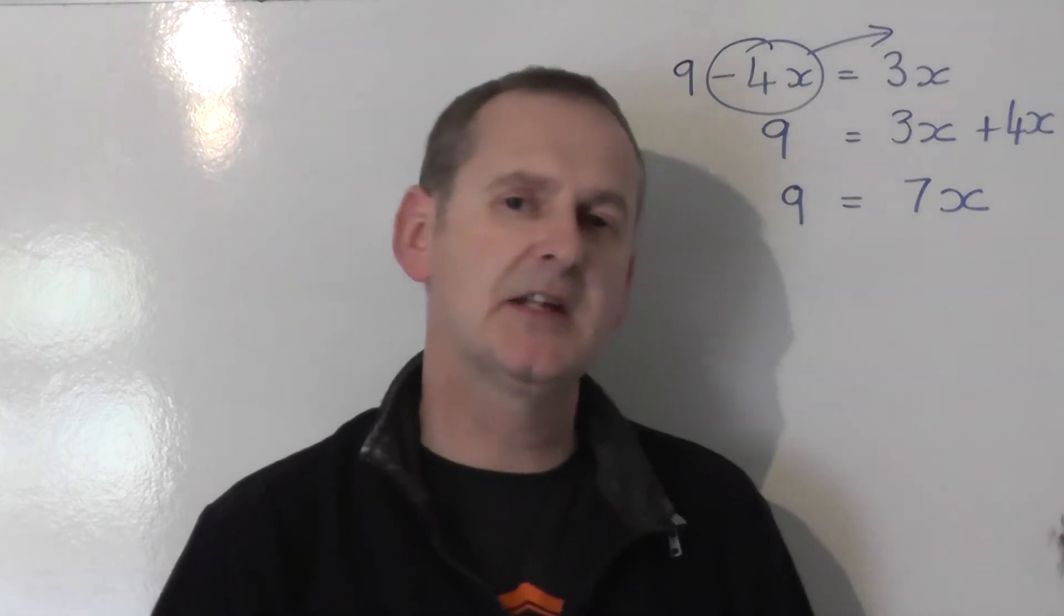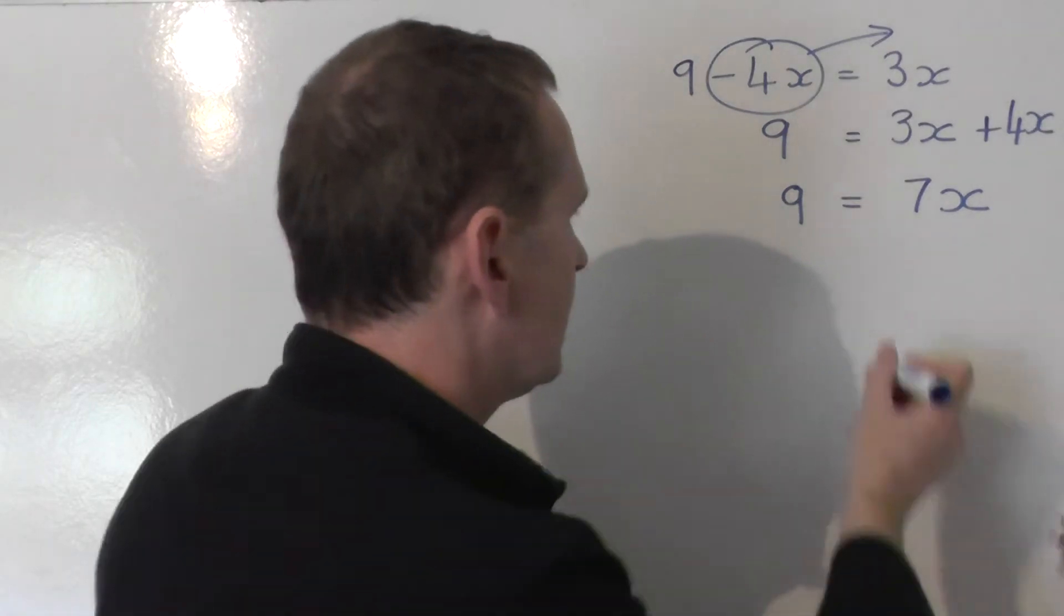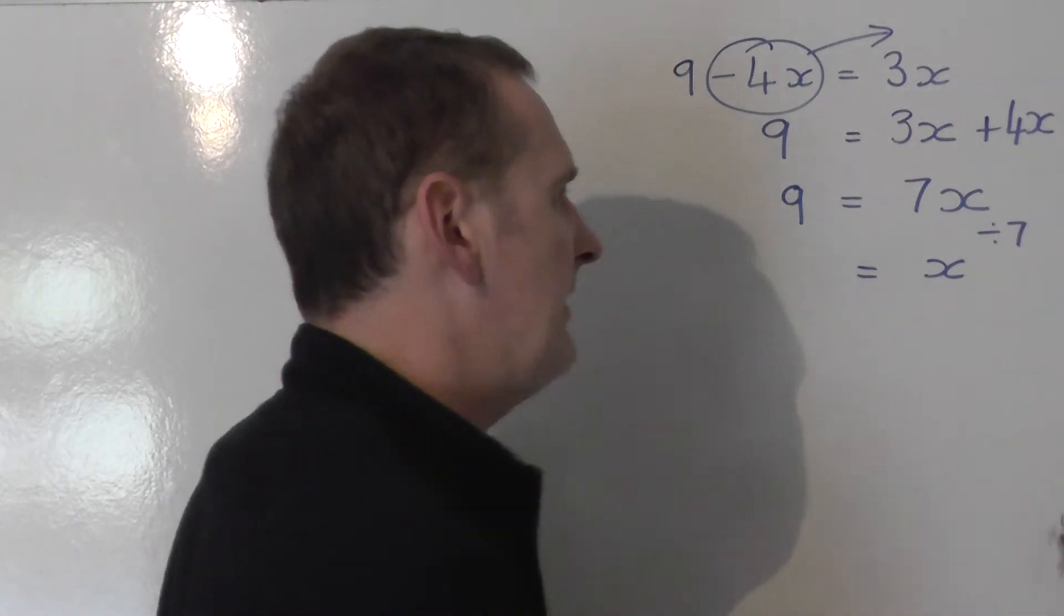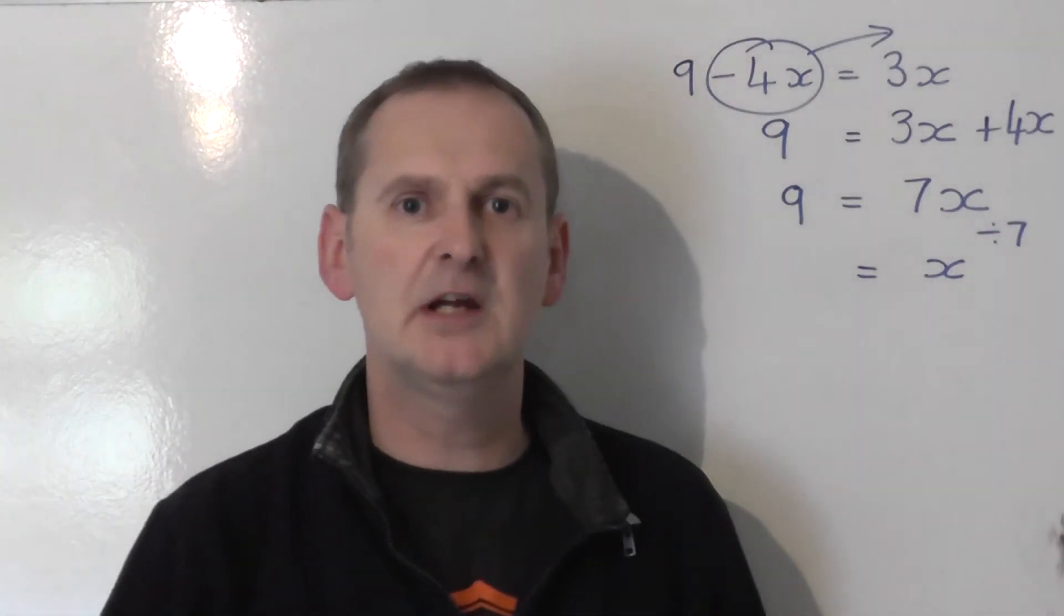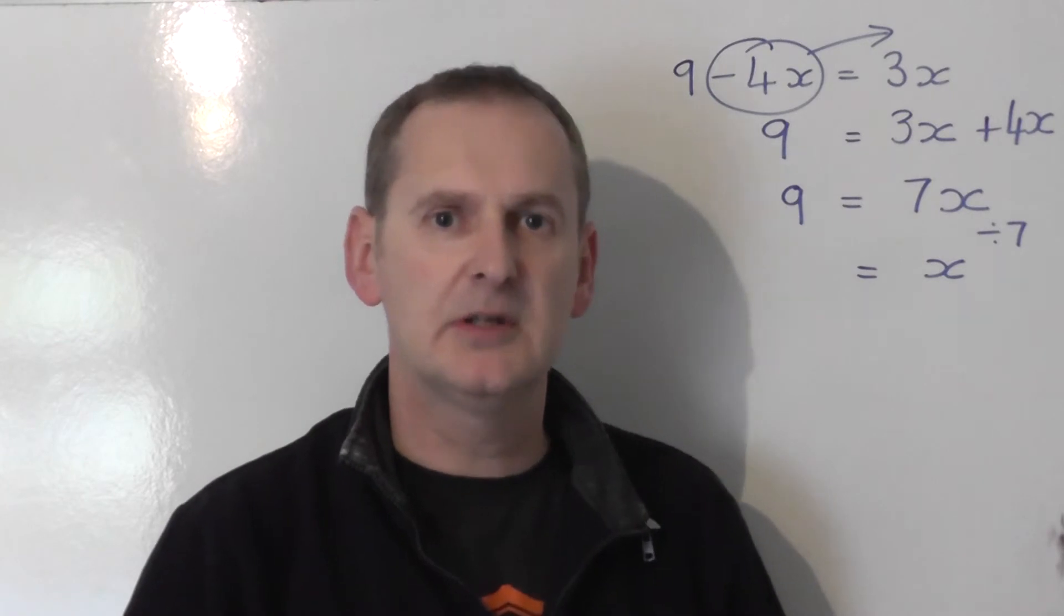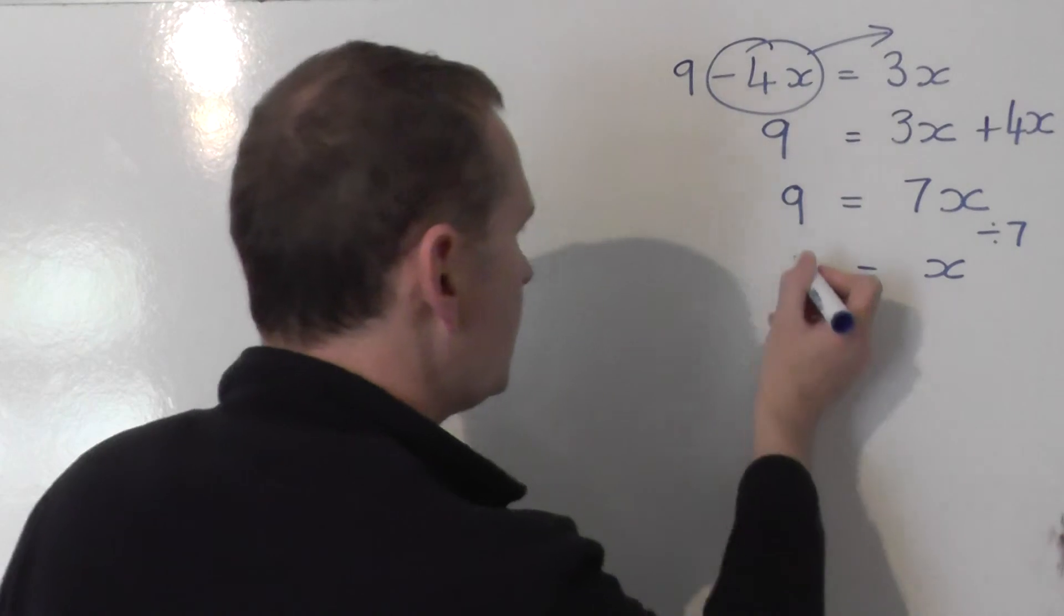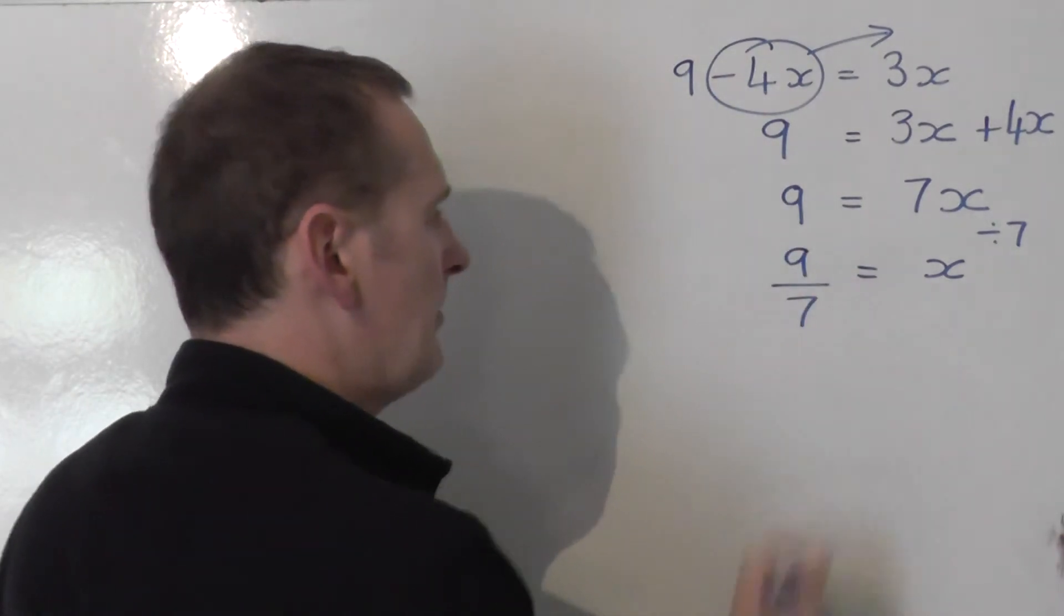But I don't want to know what 7x is, I want to know what x is. So I'm going to go from 7x to x by sharing the right-hand side by 7. If you share the right-hand side by 7, you share the left-hand side by 7 to keep the equation balanced. So you take the 9 and share that by 7.